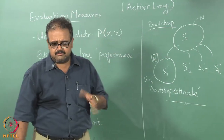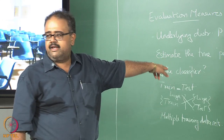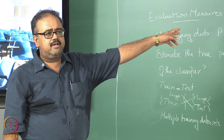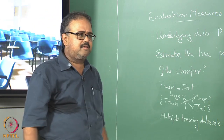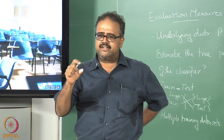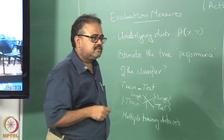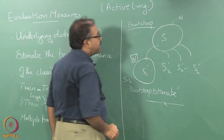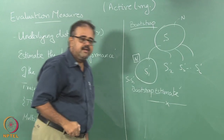Roughly about 63 percent of the data on average will be in S1 prime, and the remainder will be in the test data. This is sometimes called the 0.632 bootstrap, because sampling with replacement leaves a certain fraction of the data in the sample and another fraction in the test set. That fraction also denotes what bootstrap estimate it is.